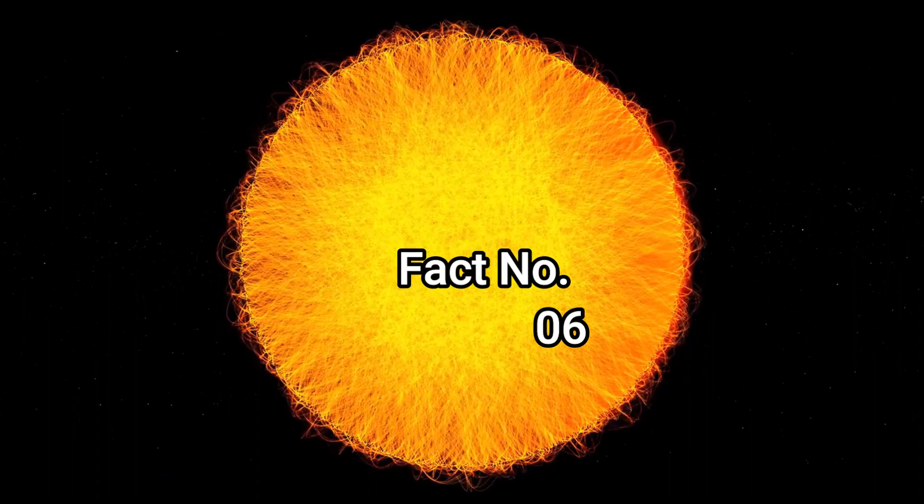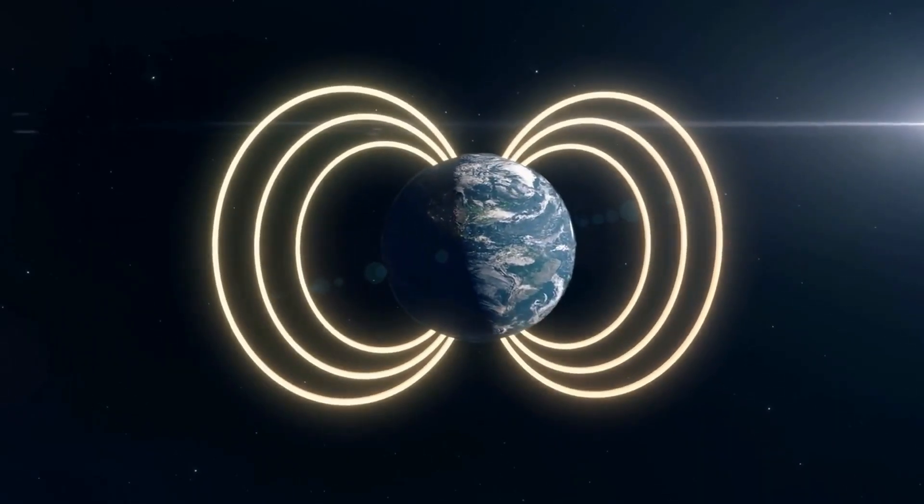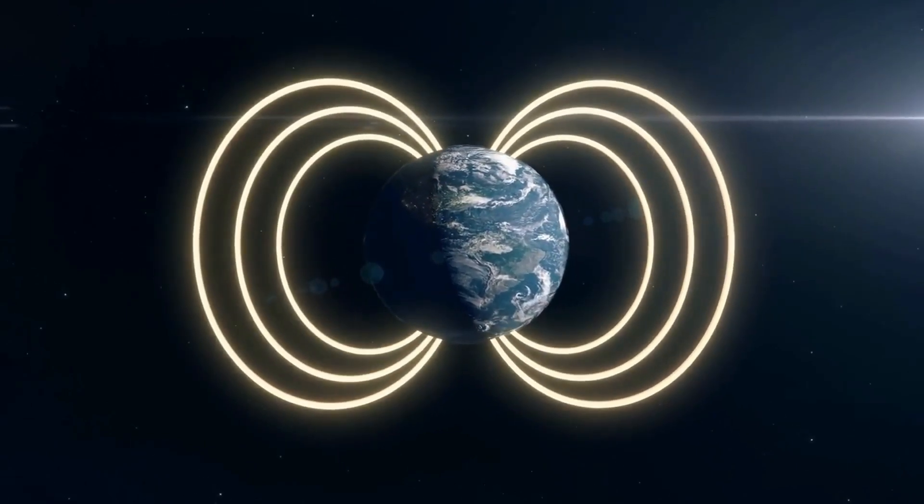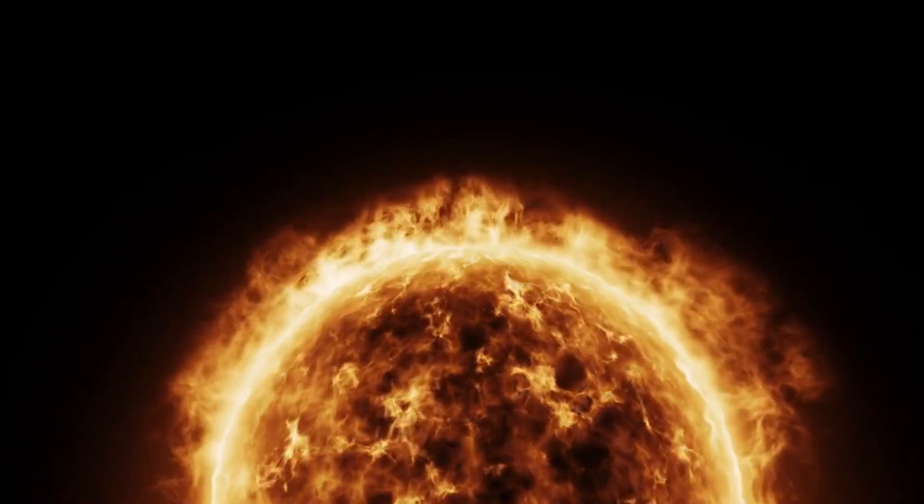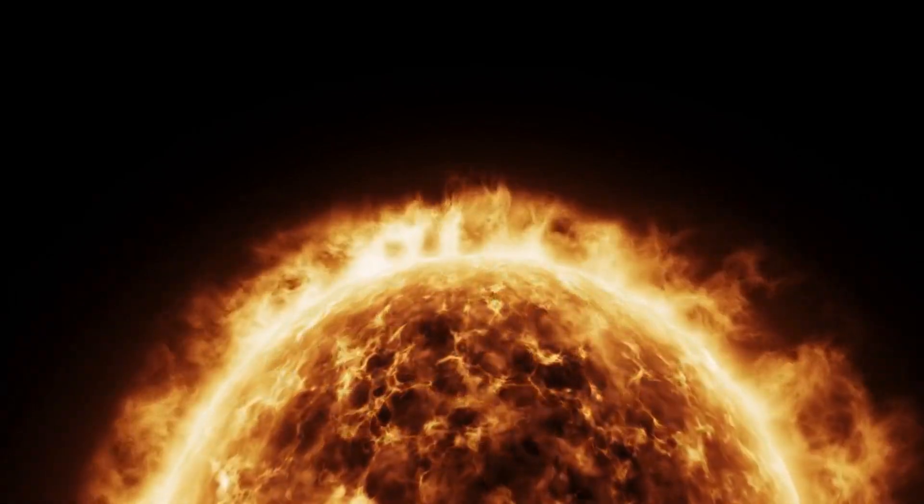Fact number six, the sun has a magnetic field. Like the Earth, the sun has a magnetic field that's responsible for many of its features. The sun's magnetic field is constantly changing and can cause sunspots, flares, and other phenomena.